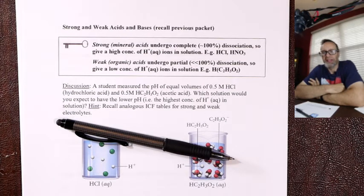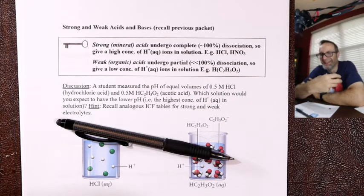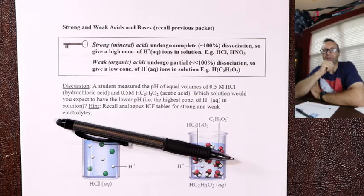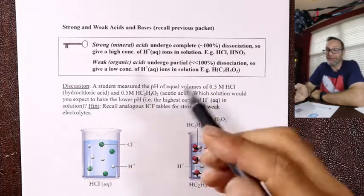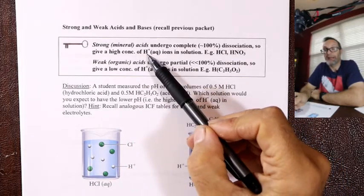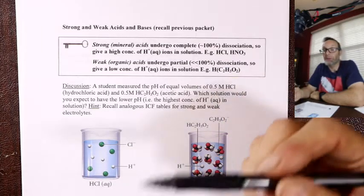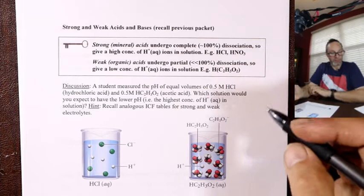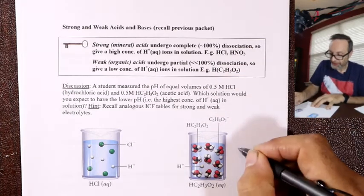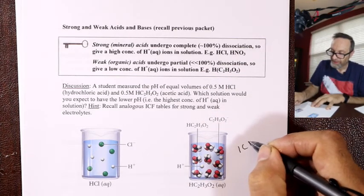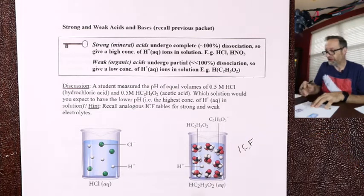Vinegar at the same concentration as HCl is not as potent, not as reactive. That must mean there's less H⁺. For a strong acid there's basically more H⁺, and for a weak acid there's less — even though there's the same number of molecules. To show this, I'm going to use an ICF table.